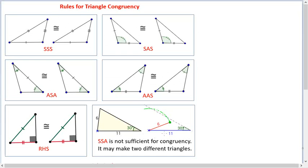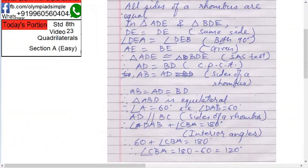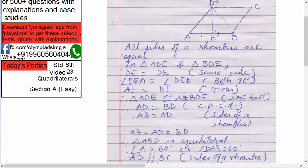SSA is not a test for congruence. So there are five. Let's get back. So ADE congruent to triangle BDE, SAS test. Therefore what? AD equals to BD. Why? CPCT - corresponding parts of congruent triangles. So you have now AD equals to BD.